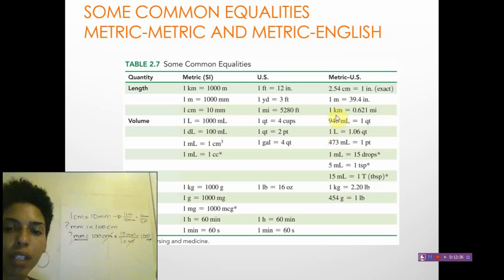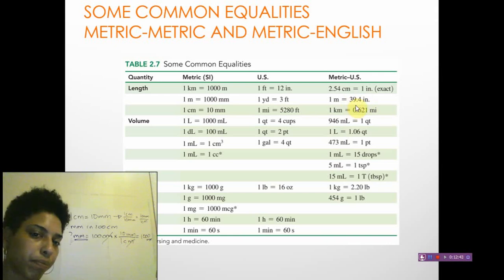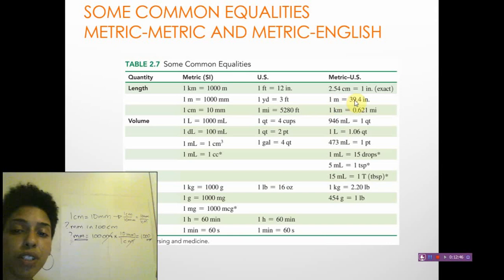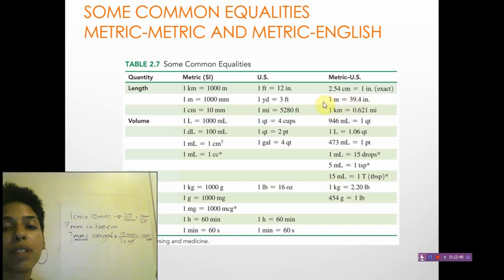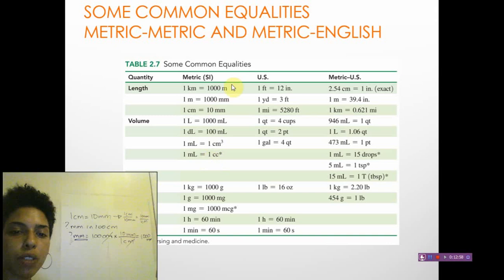The exception is centimeters to inches: 2.54 centimeters equals 1 inch, which is exact, so you don't count it in your sig figs. For other metric-to-English conversions, like 1 meter equals 39.4 inches — 39.4 has three sig figs, so your answer should have three sig figs if no other measurement has fewer. These metric-to-English values will be given on exams, but you should know your metric conversions.